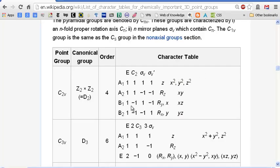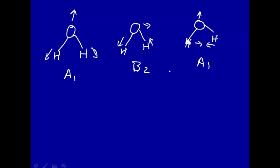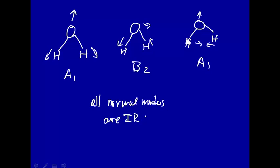Now let's look at B2. In the character table, B2 has yz — the yz product has irreducible representation B2. So this mode is also Raman active, as it has the same irreducible representation as a second-order Cartesian term. Therefore all normal modes of water are both IR active and Raman active.